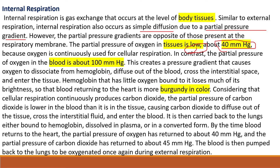At the tissue level, blood has a partial pressure of oxygen of 100 mmHg while the tissue has 40 mmHg. Hemoglobin releases its oxygen, which then moves into the interstitial spaces and into the tissue cells. Hemoglobin that has released oxygen becomes deoxygenated — the blood takes on a dark burgundy color rather than bright red.